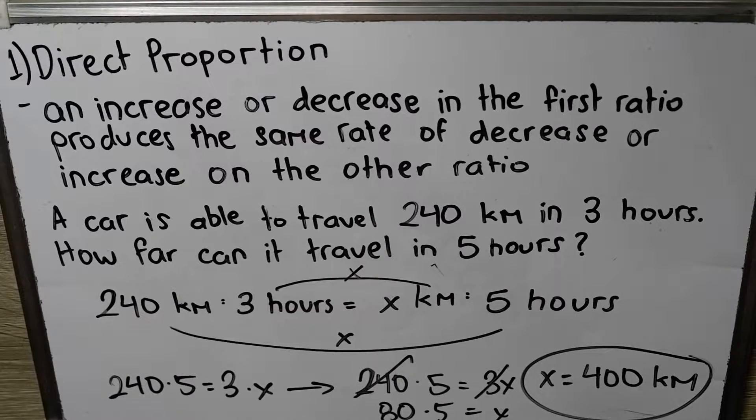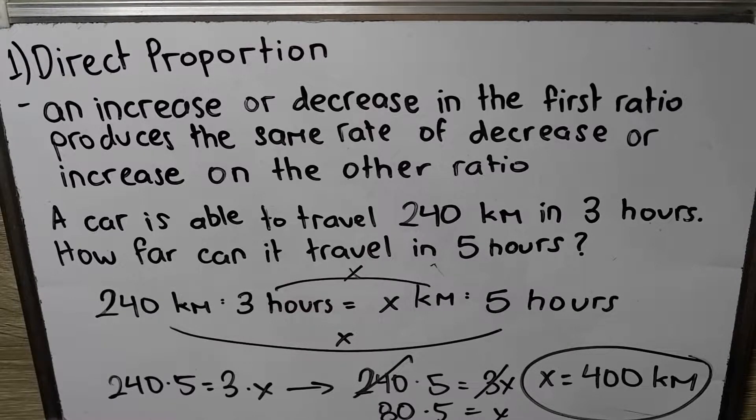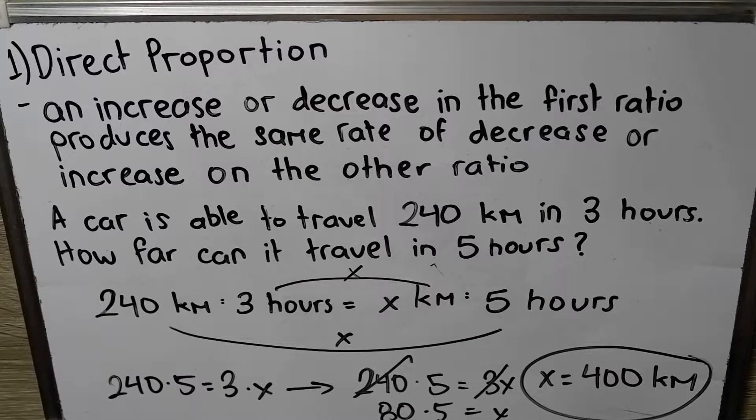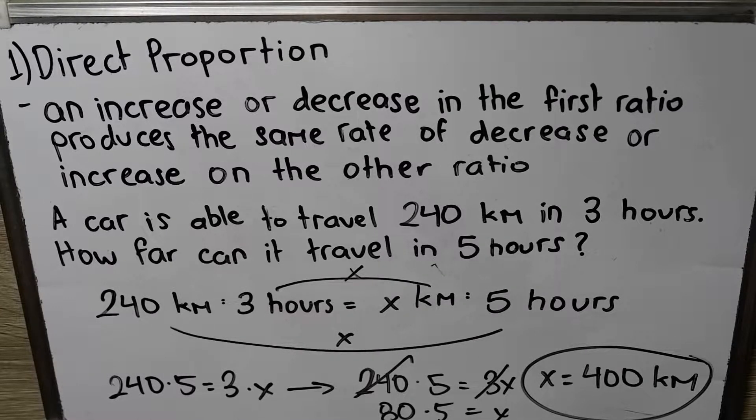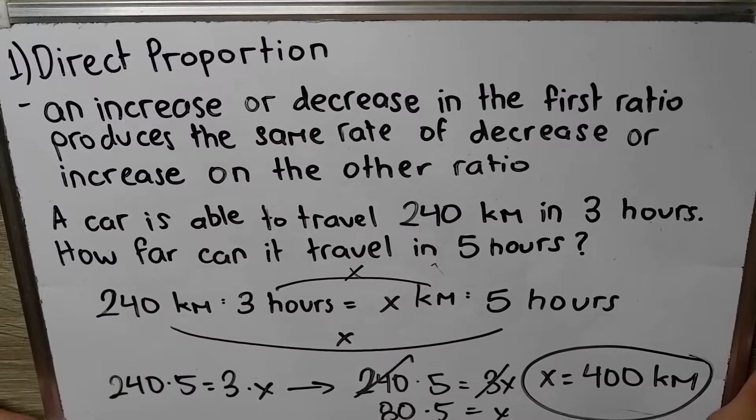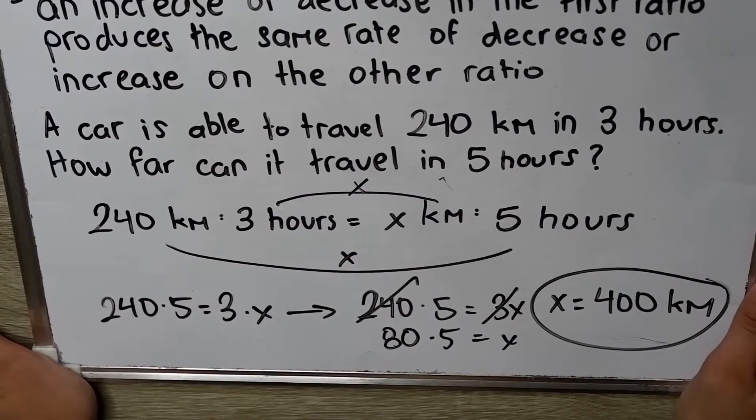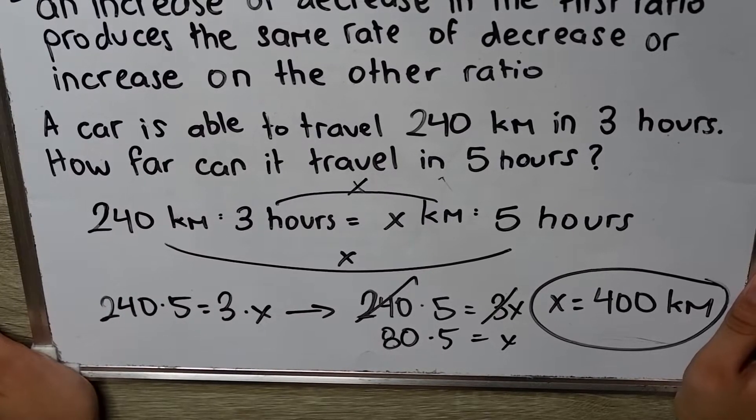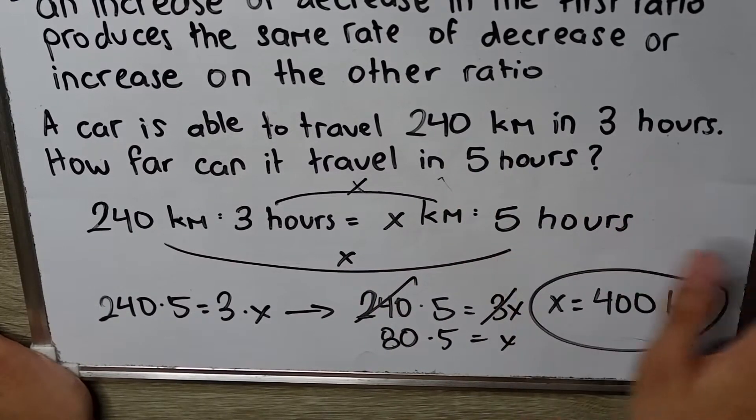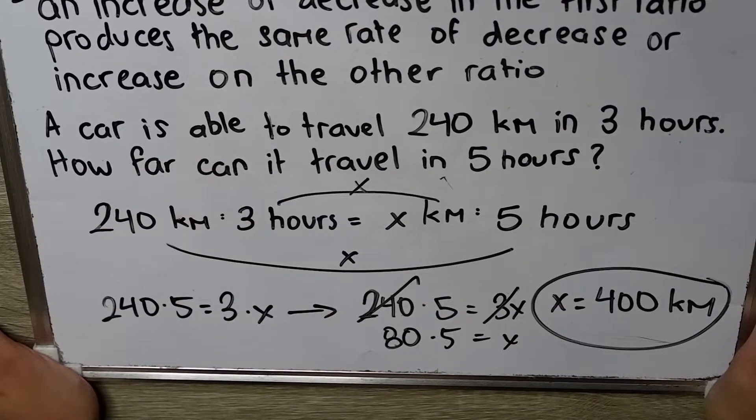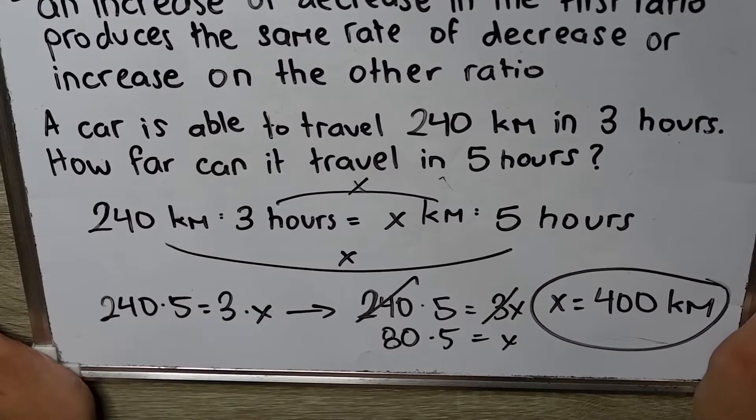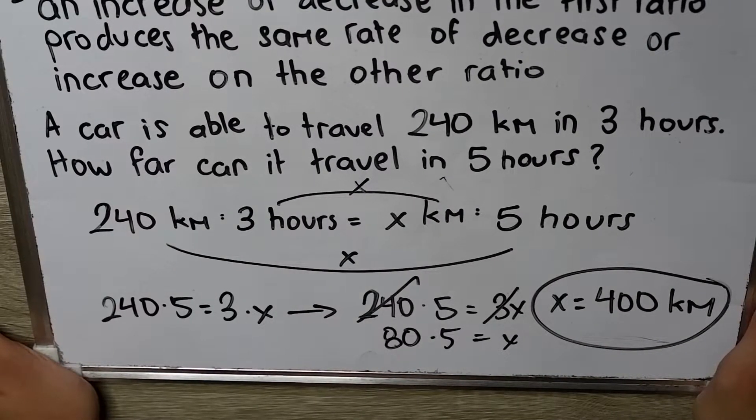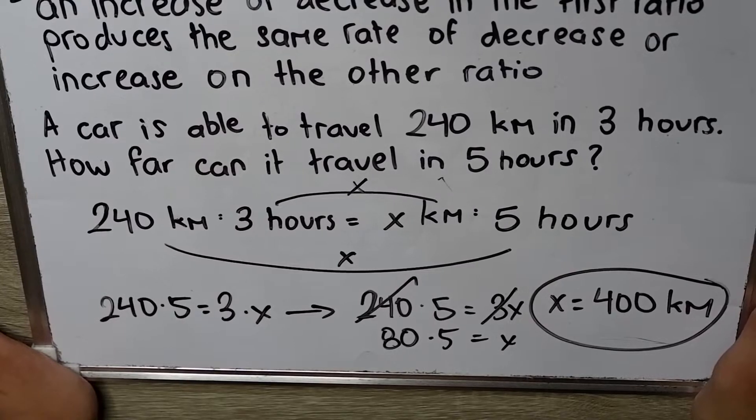This proportion is an increase or decrease in the first ratio produces the same rate of decrease or increase on the other ratio. For example, a car is able to travel 240 kilometers in three hours. How far can it travel in five hours? Here is the solution. 240 kilometers is to three hours. That is this ratio. Equals x kilometers. That's what we are solving for. It's to five hours.